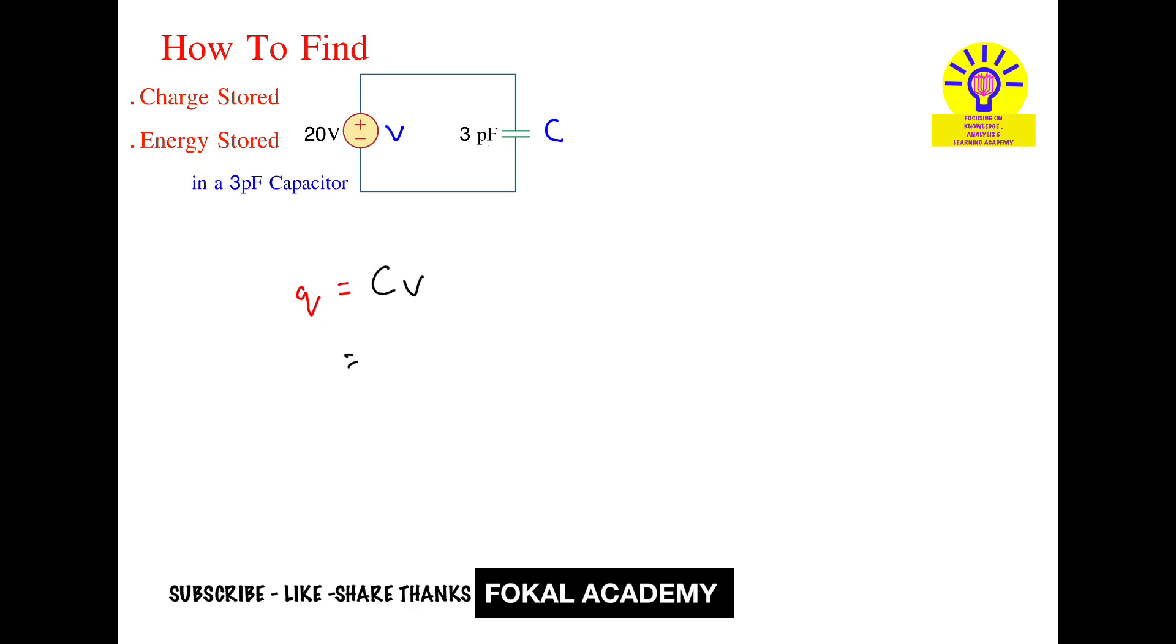C is 3pF, that is, pico means 10 power minus 12. Next, voltage is 20V. So by simplifying this, we will get 60 picocoulombs. So unit of charge is coulombs, C means coulombs.